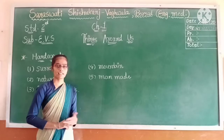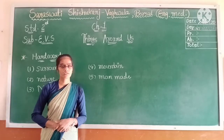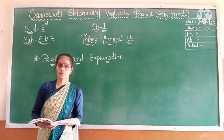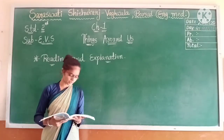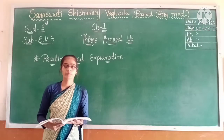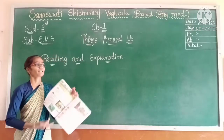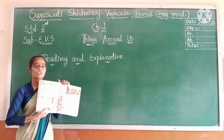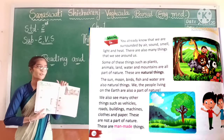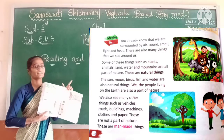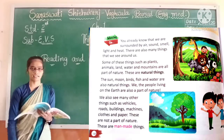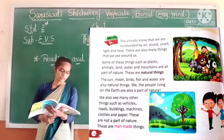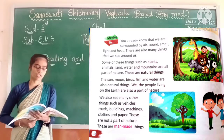I hope all of you have been following along. We are going to learn about all these things in detail by reading and explaining the chapter. Pay attention here. Open your textbook at page 160, Chapter 1: Things Around Us. Those who don't have the textbook, I will manage a slide so that you can get it easily.